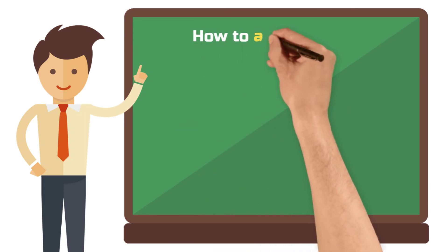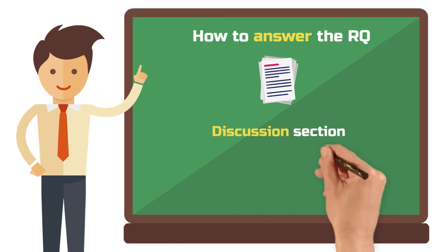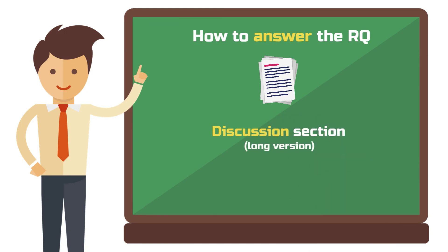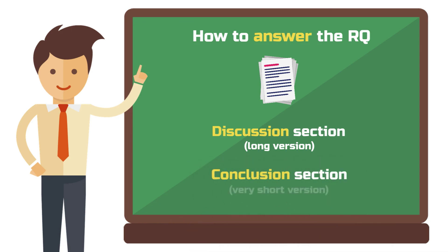How do you answer the research question? You will answer your question in detail in the discussion section of your paper or thesis. Here, you address each of the findings you highlighted in your main body and review them for relevance against the research question. You will also relate it to the literature you have previously selected as the basis for your argument. You also answer your research question in your conclusion — here, however, you get very specific and summarize the findings in a few sentences. When writing your conclusion, keep your research question in mind and try to answer it as directly as possible.